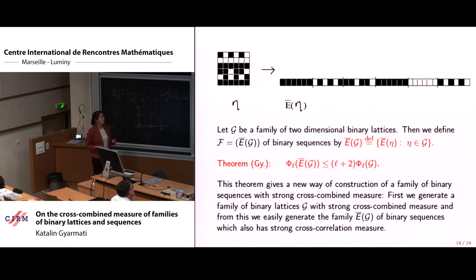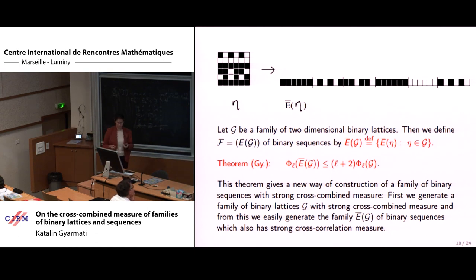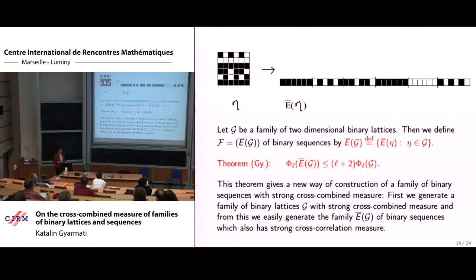This was generalized by me for the cross-correlation measure and the cross-combined measure, and everything worked the same way as with the correlation measures. It is a very good approach to construct strong families with strong cross-correlation measure: construct a two-dimensional construction and obtain from it a one-dimensional construction of sequences.